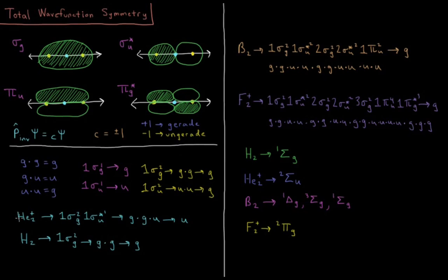For He₂⁺, the term symbol would be a doublet sigma by similar logic. The configuration is 1σg² 1σu*¹. That's g times g times u: g times g is g, and g times u gives u. So helium 2 plus is doublet sigma u.